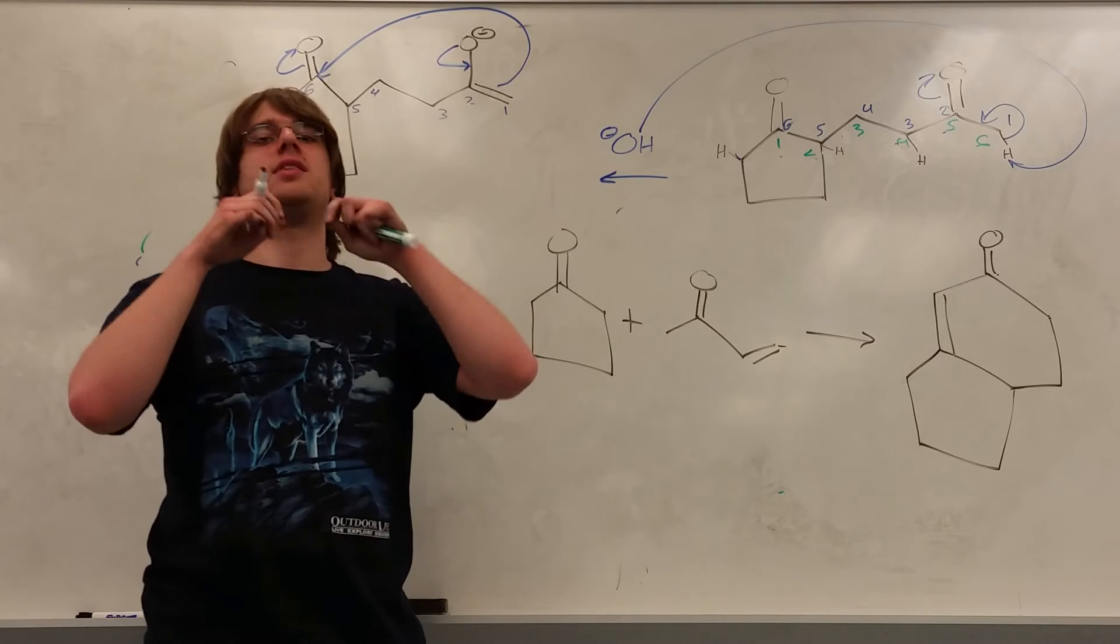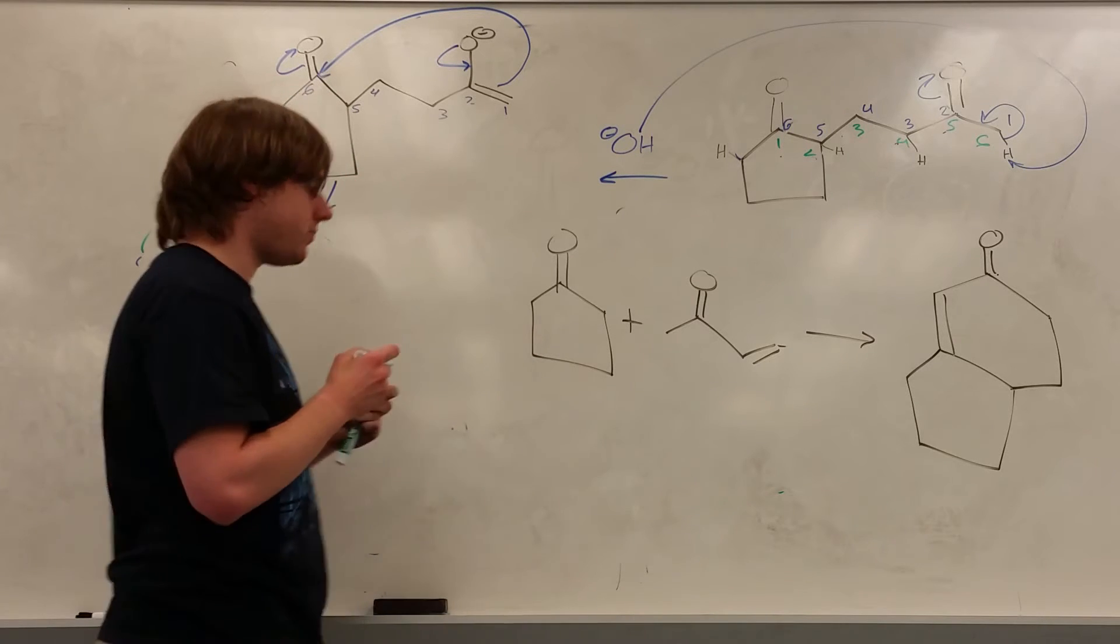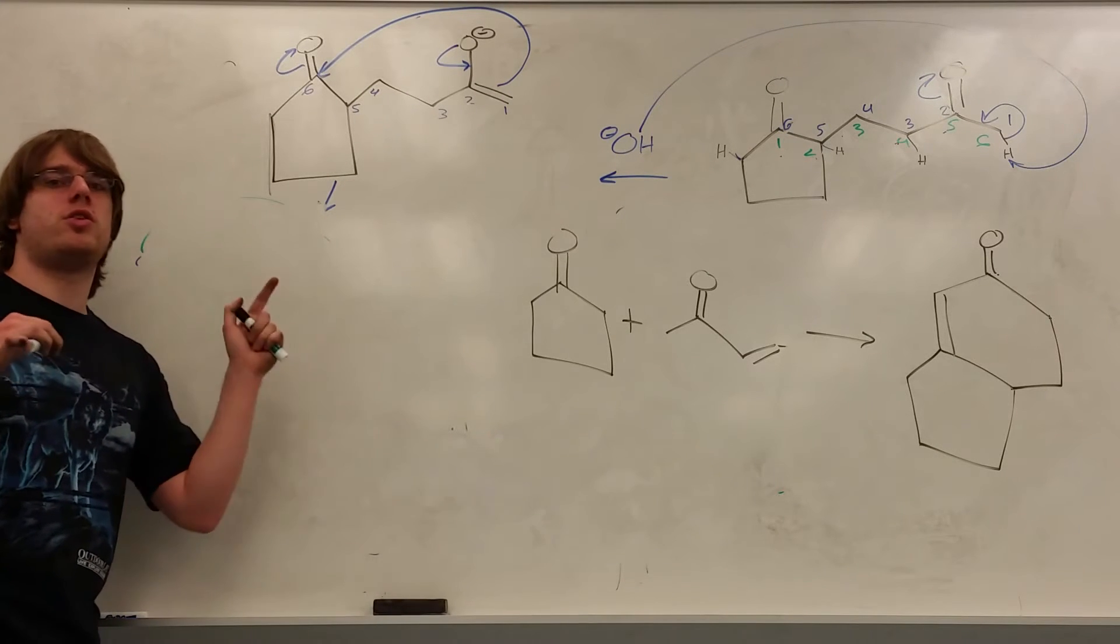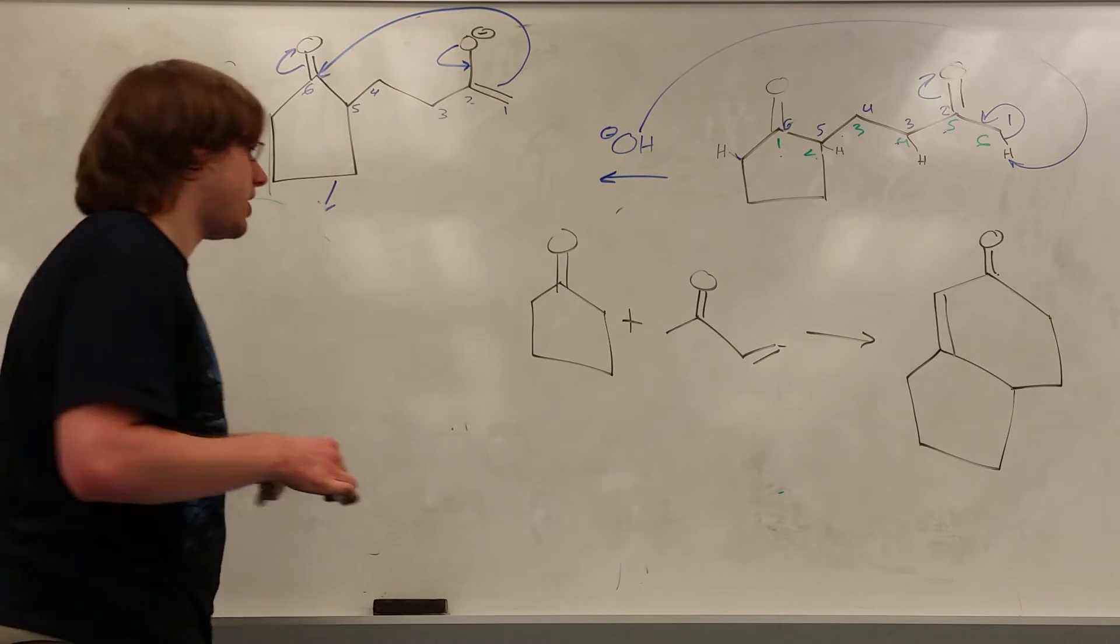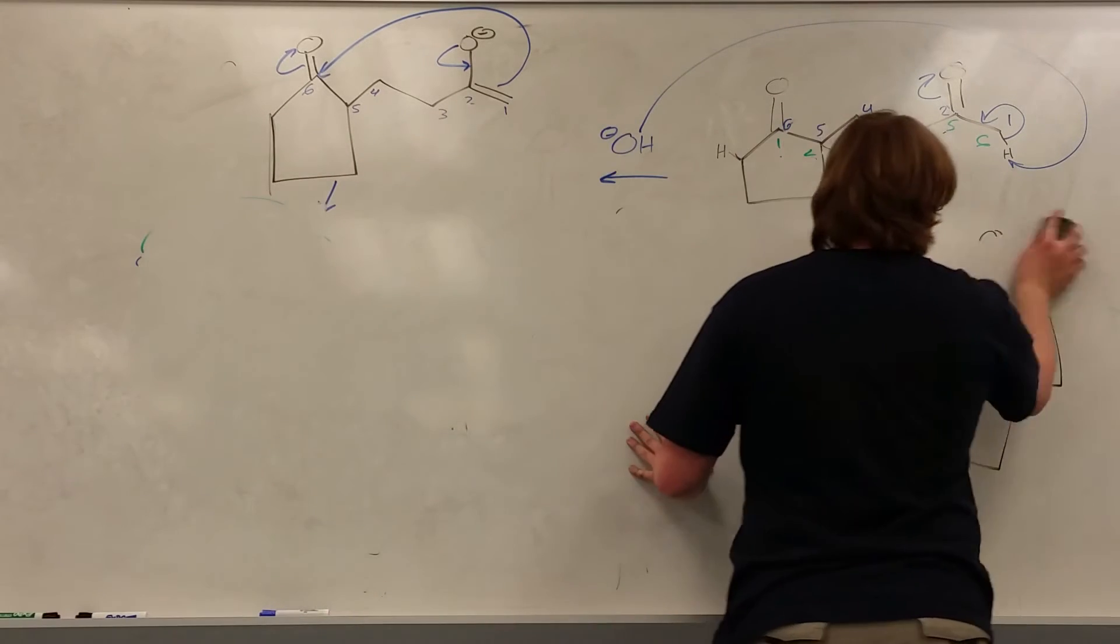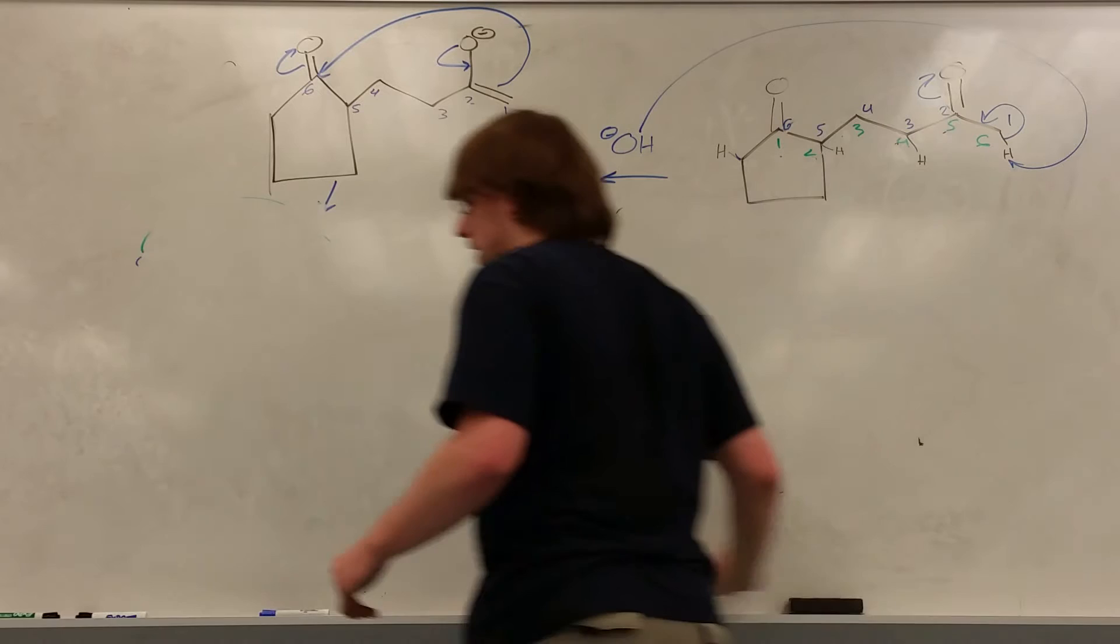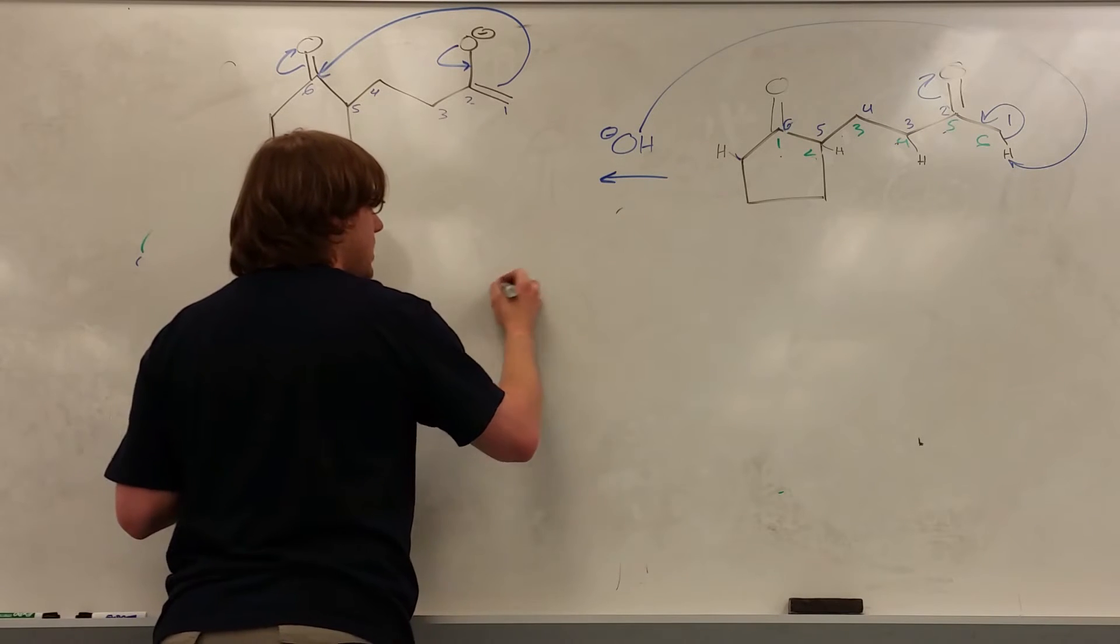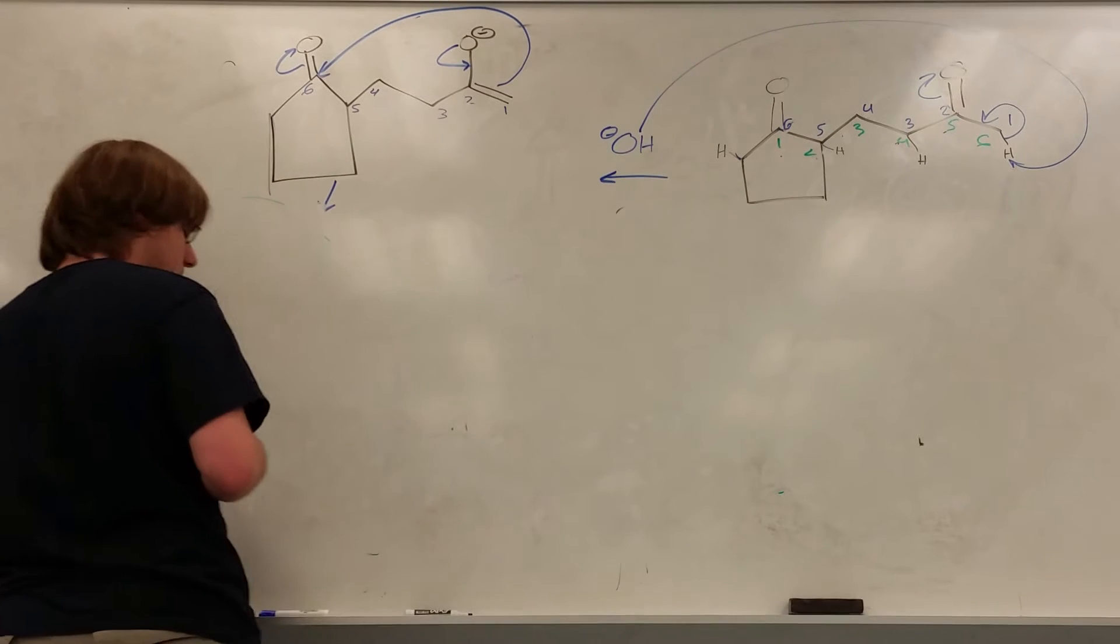We have a final product that has at least one six-membered ring in it, and because of that it's actually pretty easy to predict what were the two pieces that came together to make that final product. So let's take our product that we made and try to figure out what were the two pieces that came together to make it without knowing.